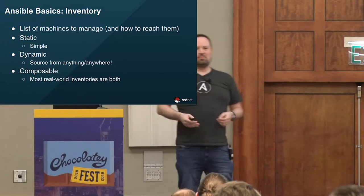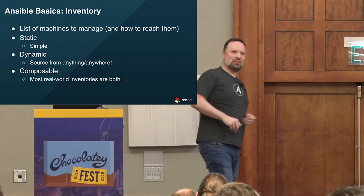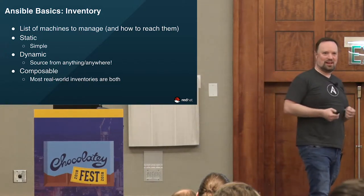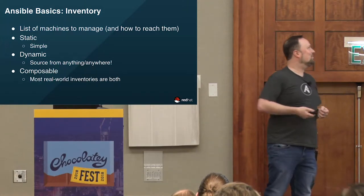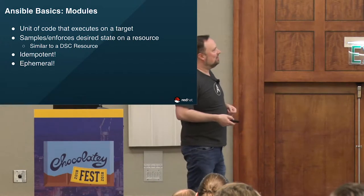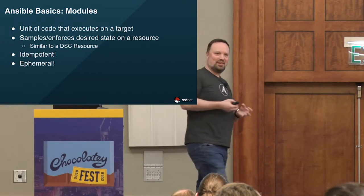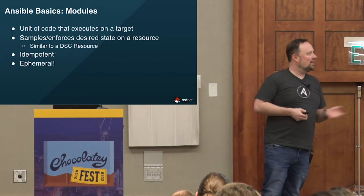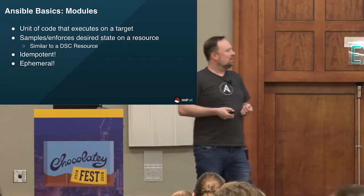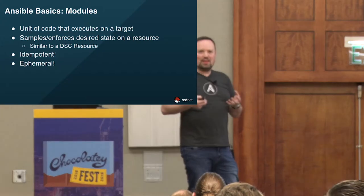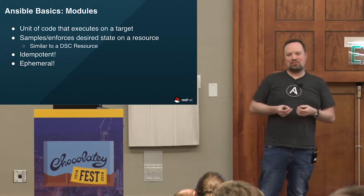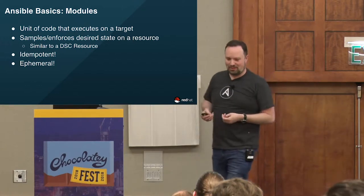We'll see examples of all this. We're going to build one from scratch — I'm going to install Ansible and show you how you would do that. It should work exactly the same way under WSL; I'm running Fedora today. The next building block for Ansible you need to know about are modules. This is where the heavy lifting occurs — it's a unit of code that executes on a remote target.